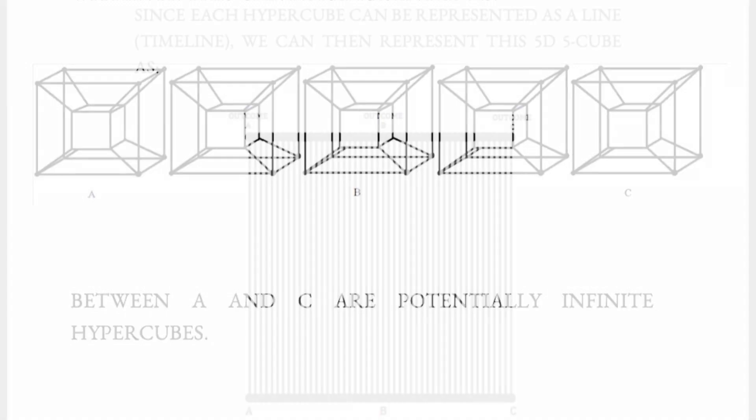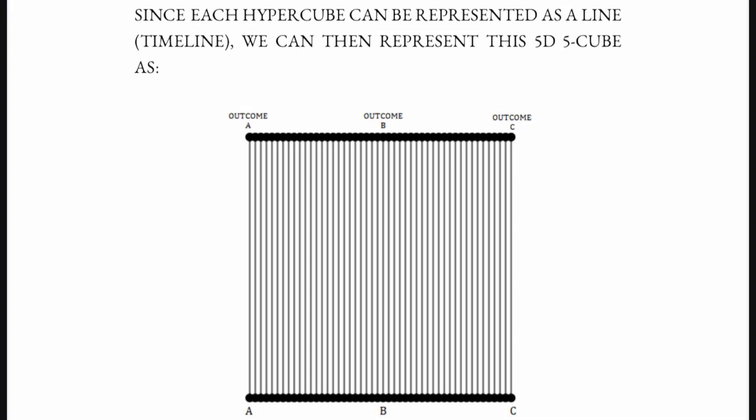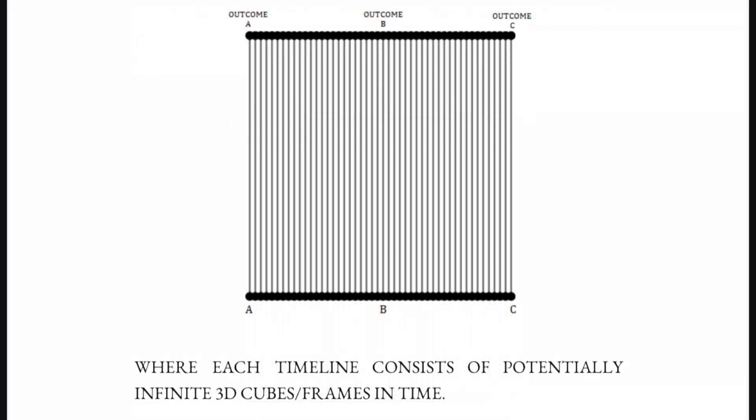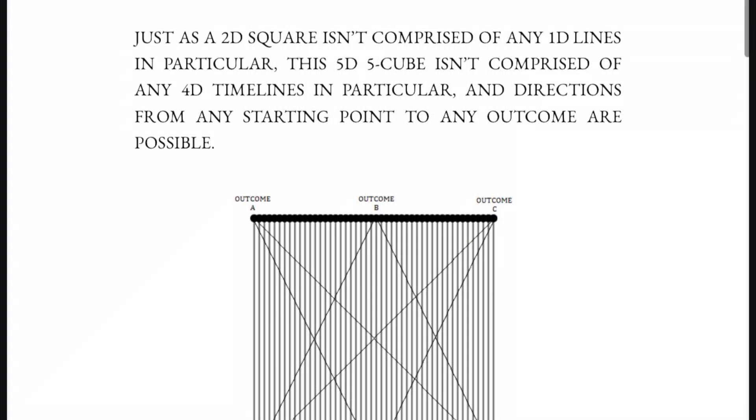Since each hypercube can be represented as a line — a timeline — we can then represent this five dimensional five-cube where each timeline consists of potentially infinite three dimensional cubes, or frames in time. Just as a two dimensional square isn't comprised of any one dimensional line in particular, this five dimensional five-cube isn't comprised of any four dimensional timelines in particular.